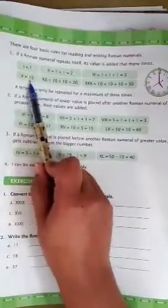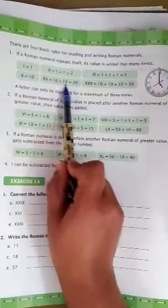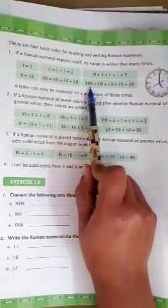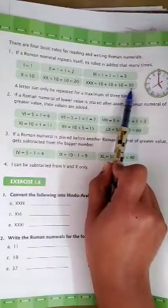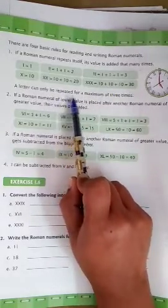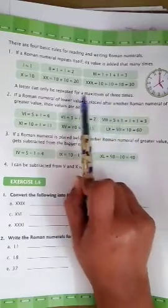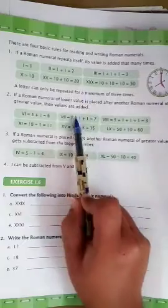X means 10. Then, if we have 2X, then it means 10 plus 10 is equal to 20. If we have 3X, then it means 10 plus 10 plus 10 is equal to 30. A letter can only be repeated for a maximum of 3 times. Means, you can repeat a letter only 3 times.